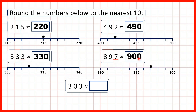On a number line, we can see that 897 is closer to 900 than it is to 890. Those are the multiples of 10 it's between: counting up in tens we say 890, and then the next multiple of 10 is 900. Because it's closer to 900, that's why we round up.